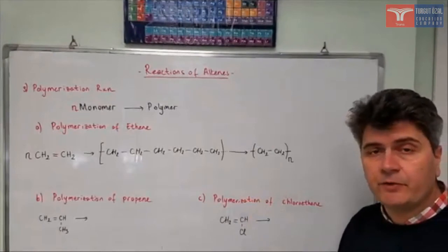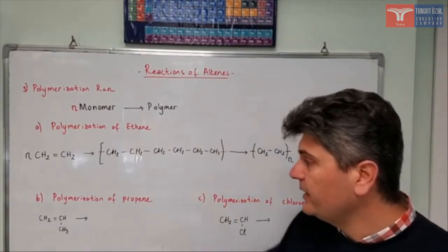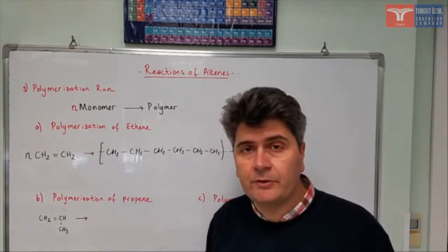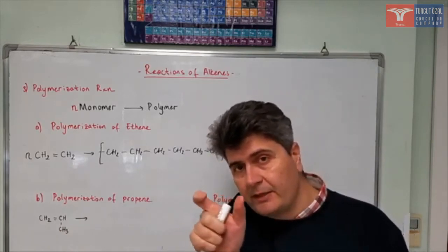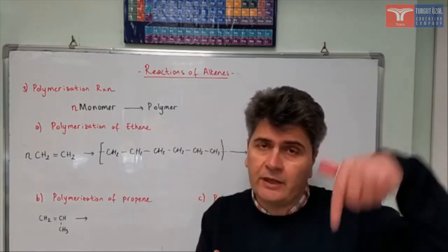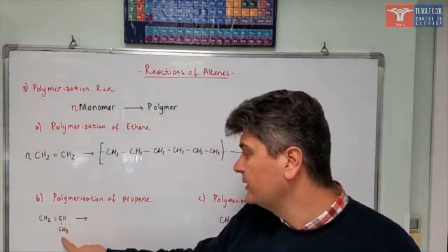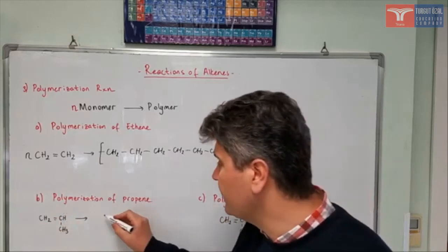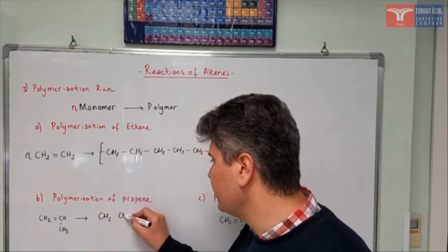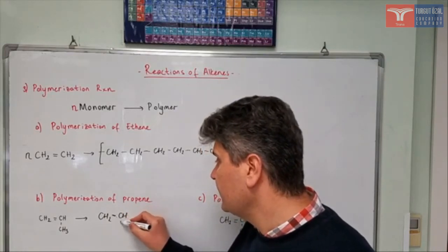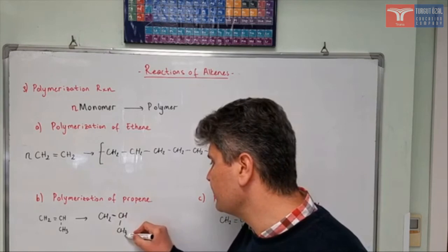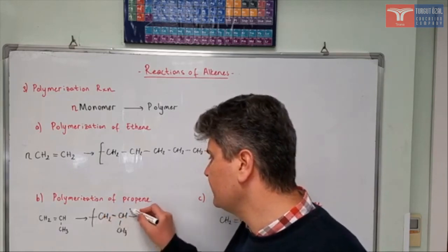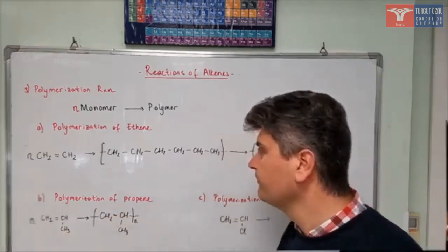Now let's write the equation for polymerization of propene. Propene is an alkene with three carbon atoms. When writing polymerization reactions, it's recommended to write the double-bonded carbon atoms on the same line and all others either up or down — I put my third carbon atom (CH₃) down. The double bond opens up: CH₂ and CH remain, but the double bond becomes a single bond, with a CH₃ group attached. This unit connects to the next and previous units, giving the polypropene formula.